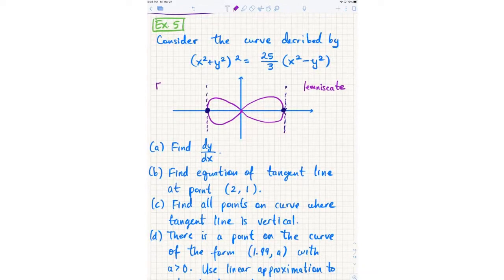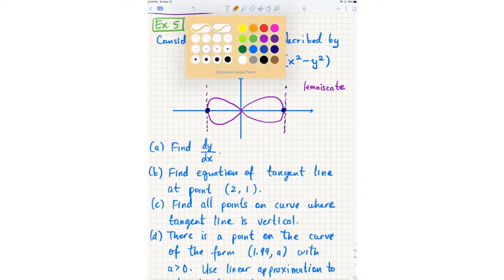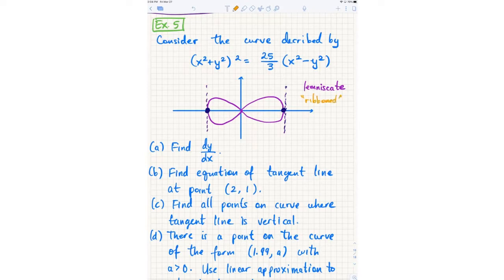It's because it can actually be expressed in polar coordinates as r² equals like cosine of 2θ or something. That actually comes up in some applications. This is actually called a lemniscate, and it really comes from Latin, meaning ribboned. Just a little fun fact.